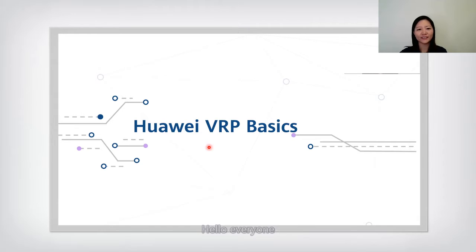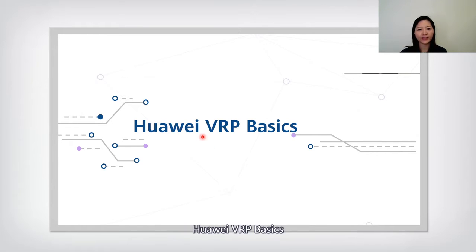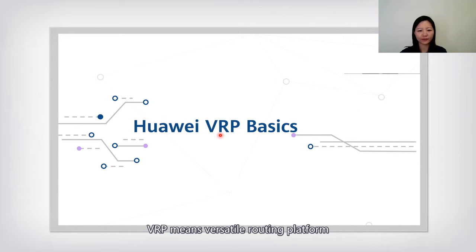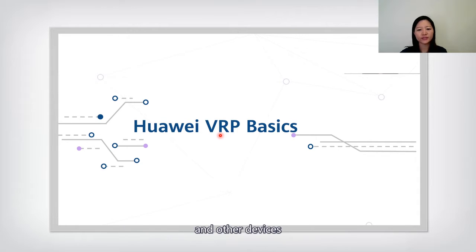Hello everyone. Today we will learn Lecture 3: Huawei VRP Basics. VRP means Versatile Routing Platform. It is a versatile platform to manage routers and other devices.